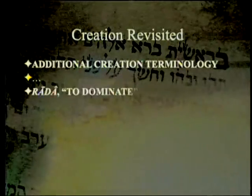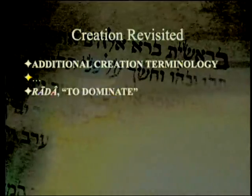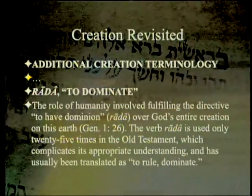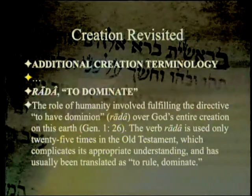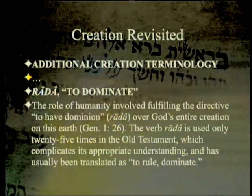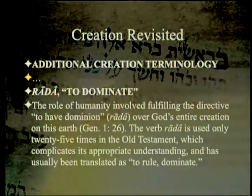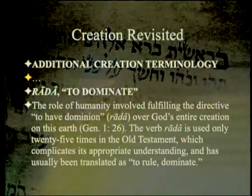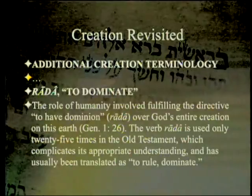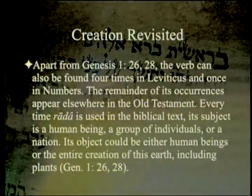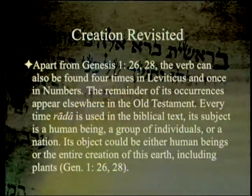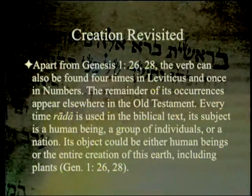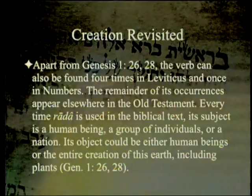Turning to additional creation terminology: 'radah,' meaning to dominate. The role of humanity involved filling the directive to have dominion over God's entire creation on earth, in Genesis 1:26. The verb 'radah' is used only 25 times in the Old Testament, which complicates its appropriate understanding, and has usually been translated as 'to rule' or 'to dominate.' Apart from Genesis 1:26 and 28, the verb can also be found four times in Leviticus and once in Numbers.